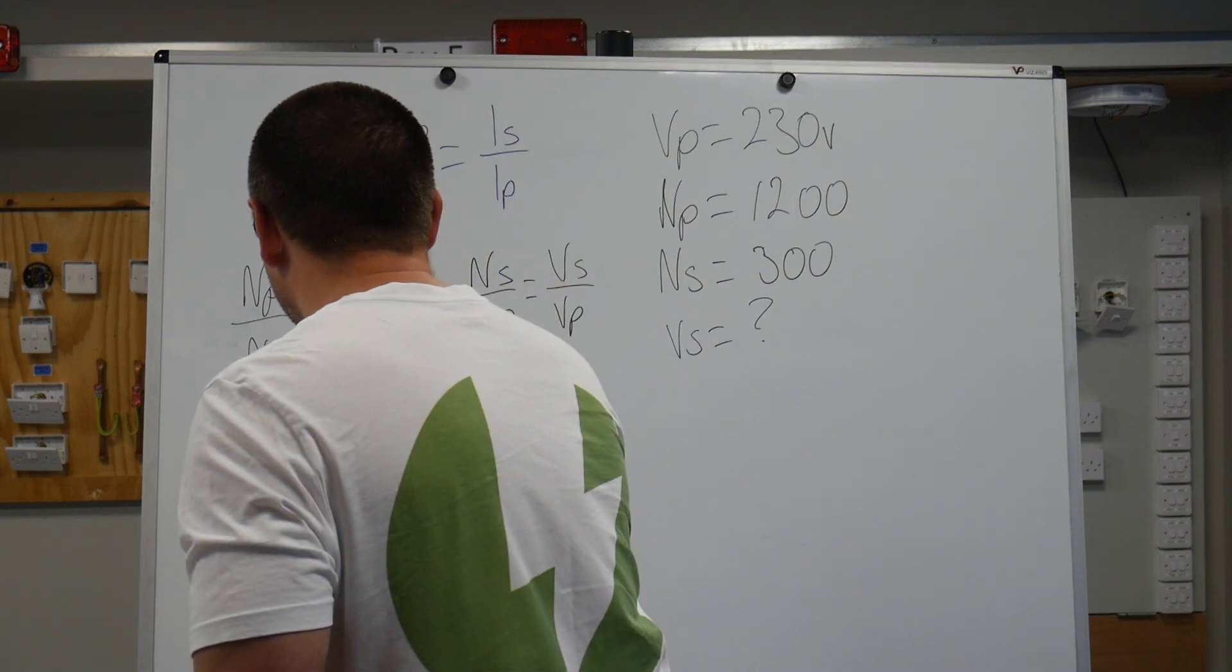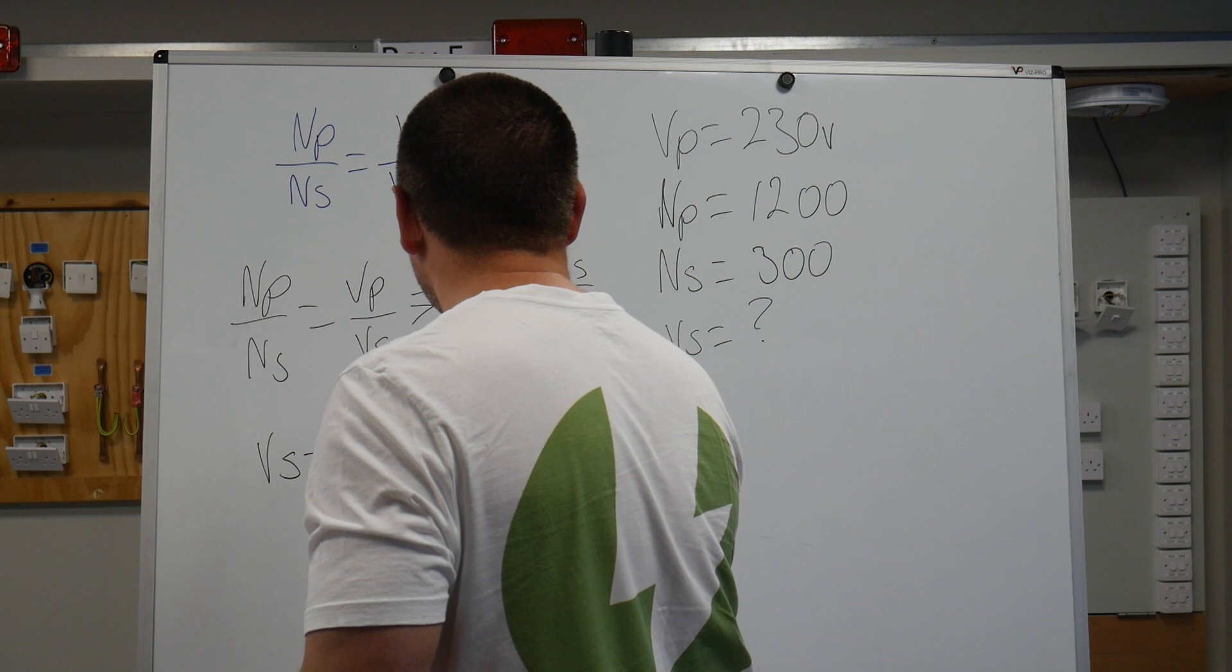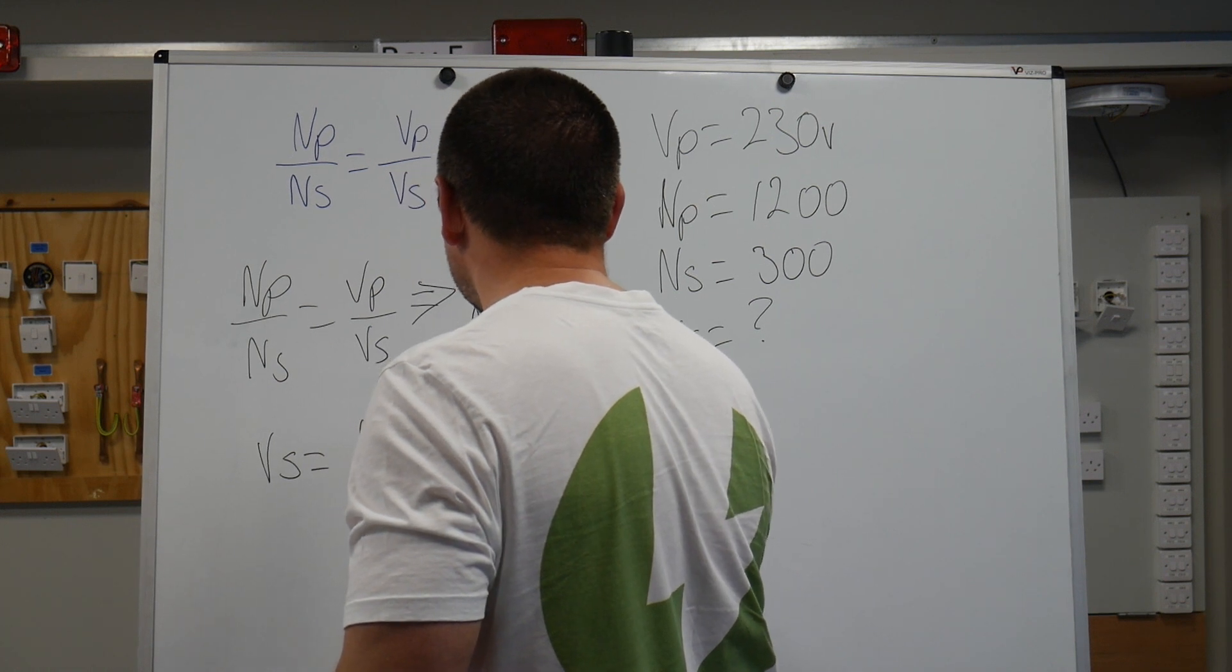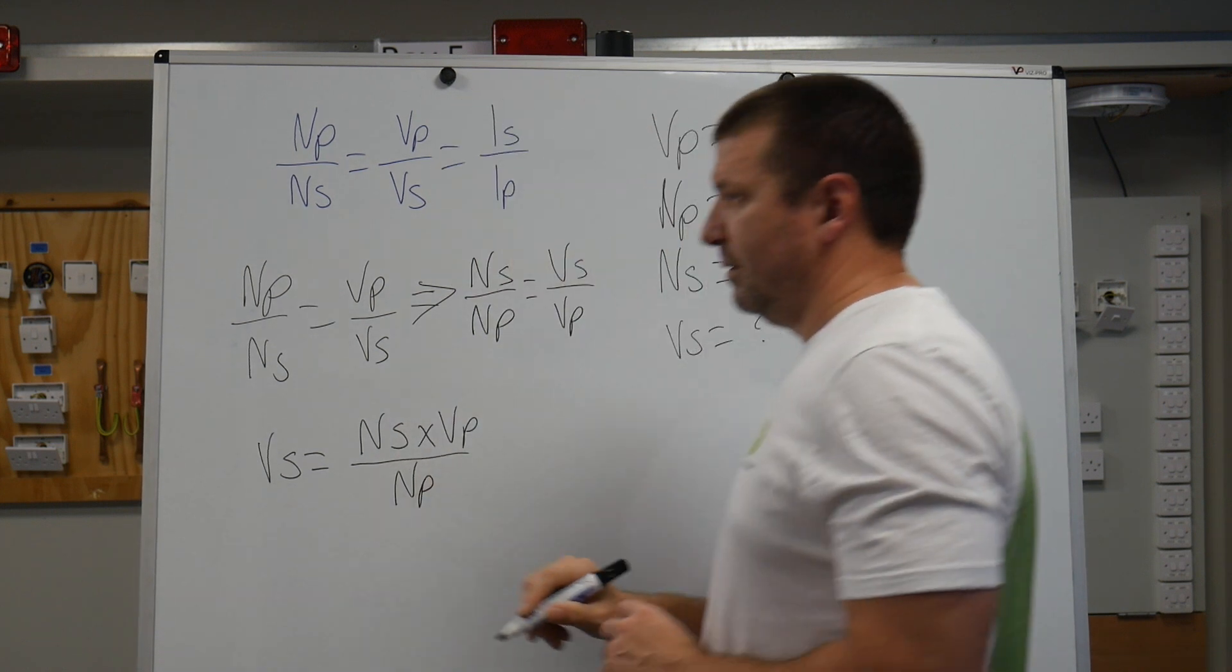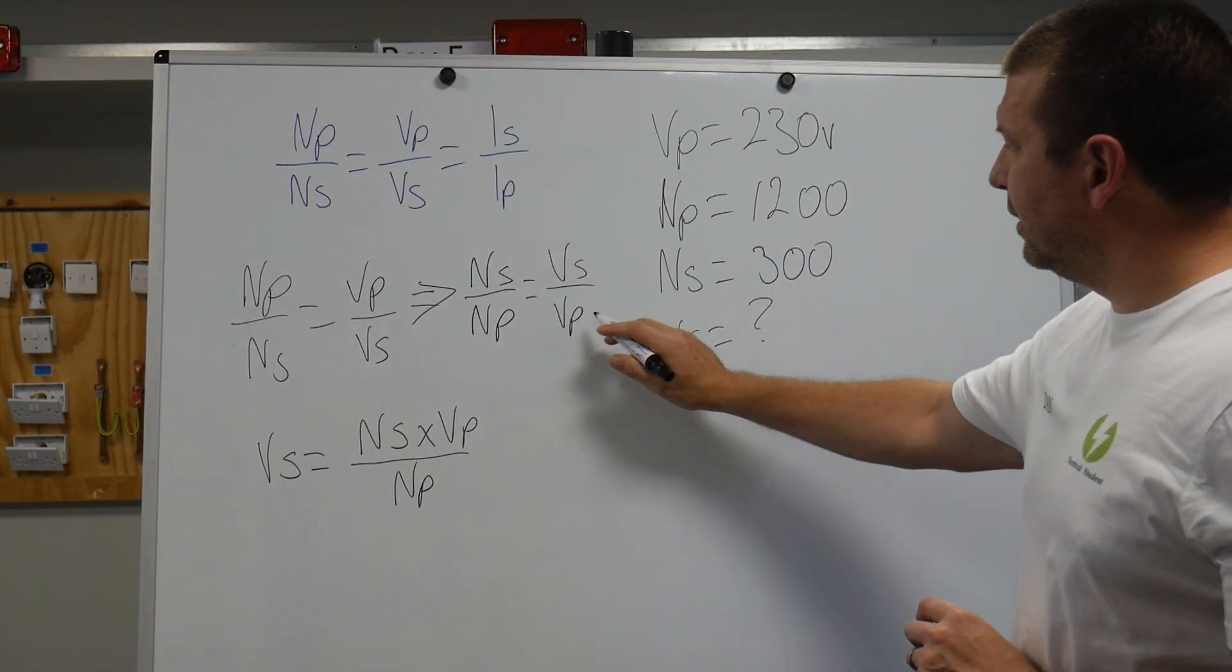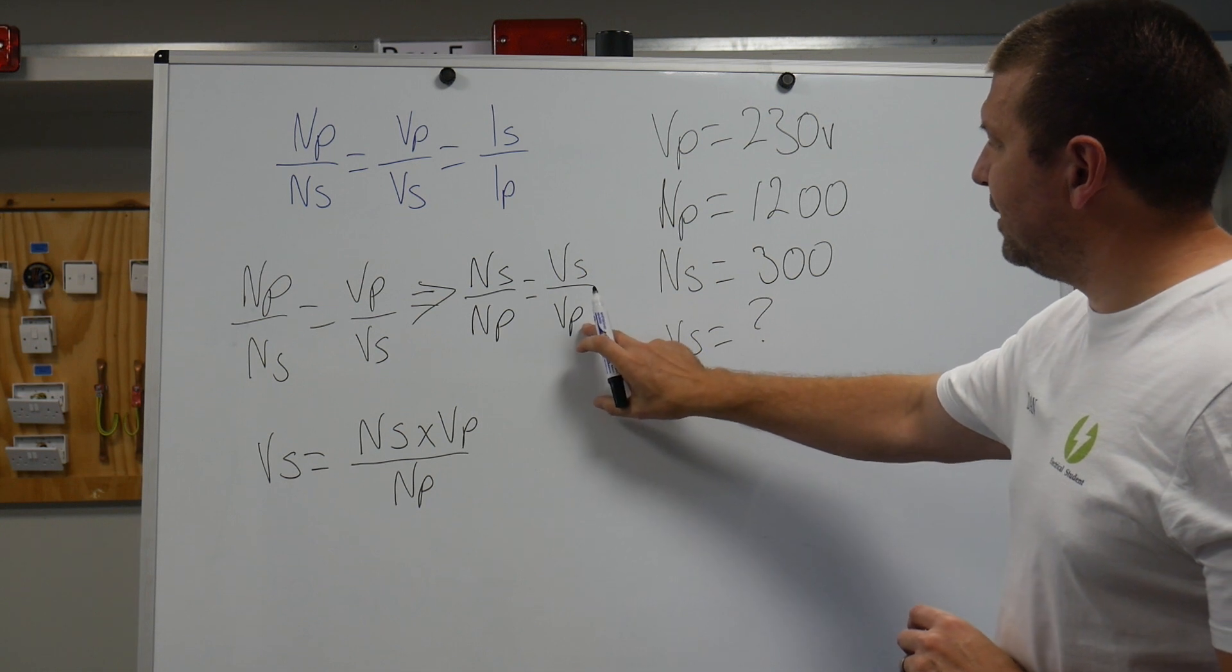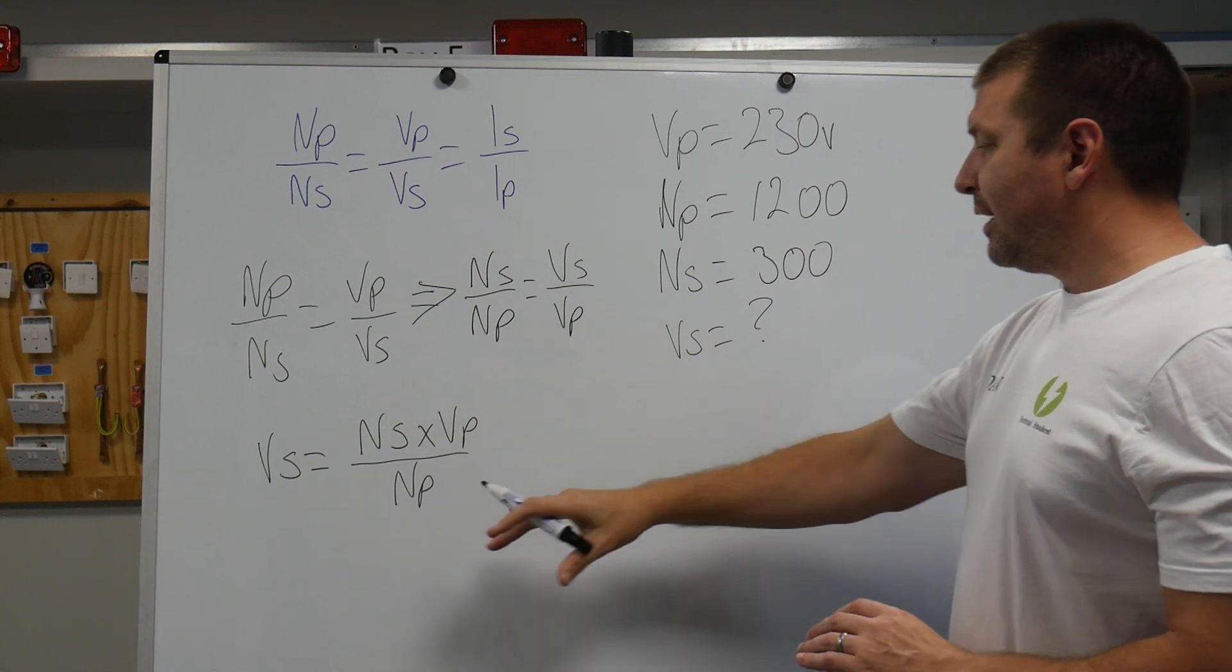So I'll quickly write that out. So that would be Vs equals Ns times Vp over Np. Can you see? I've just multiplied this Vp away from the Vs.